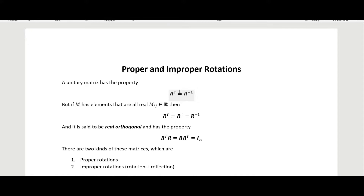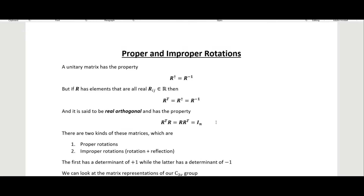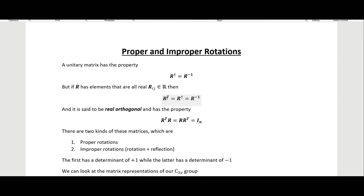A unitary matrix has the property that the conjugate transpose is equal to the inverse. If our matrix R has elements that are all real, then the transpose is equal to the conjugate transpose — since there's no conjugation happening for real numbers — which equals the inverse. It is said to be real orthogonal, with the property that the transpose times the matrix equals the identity matrix.